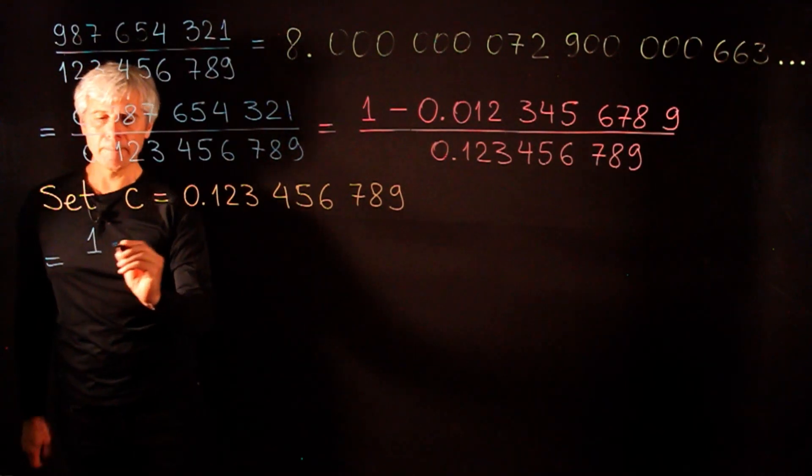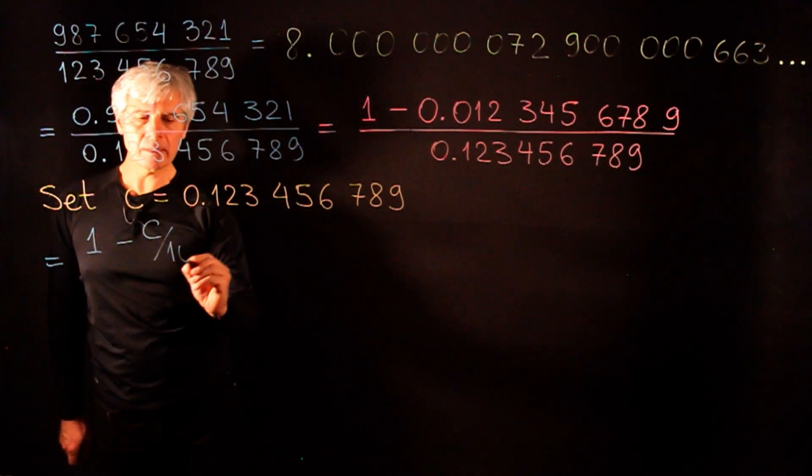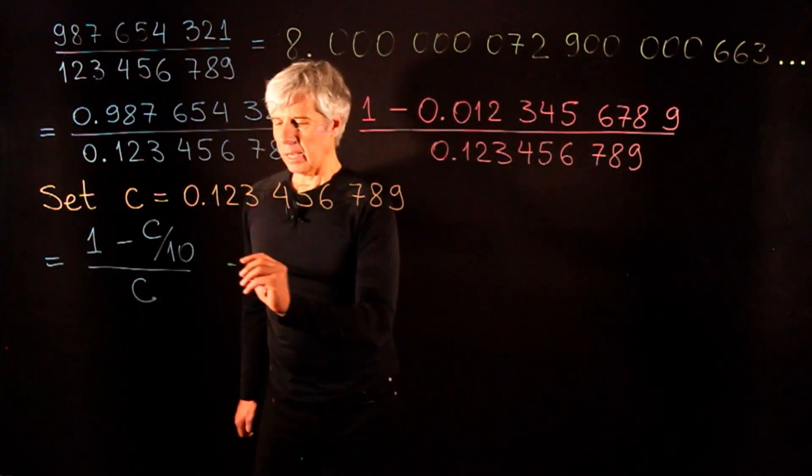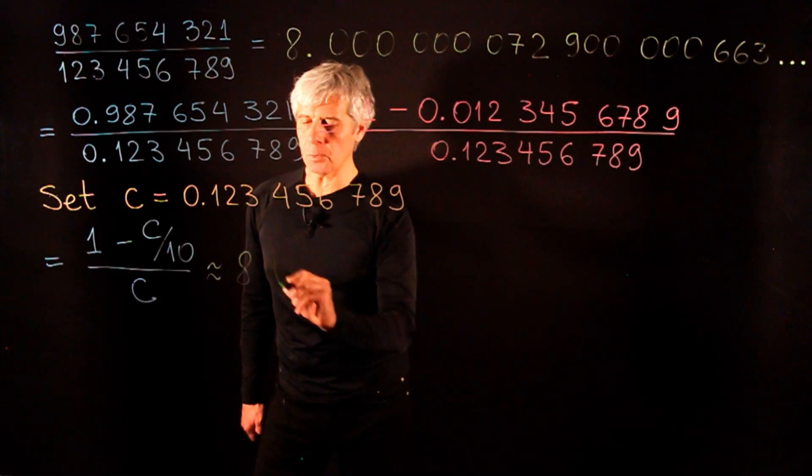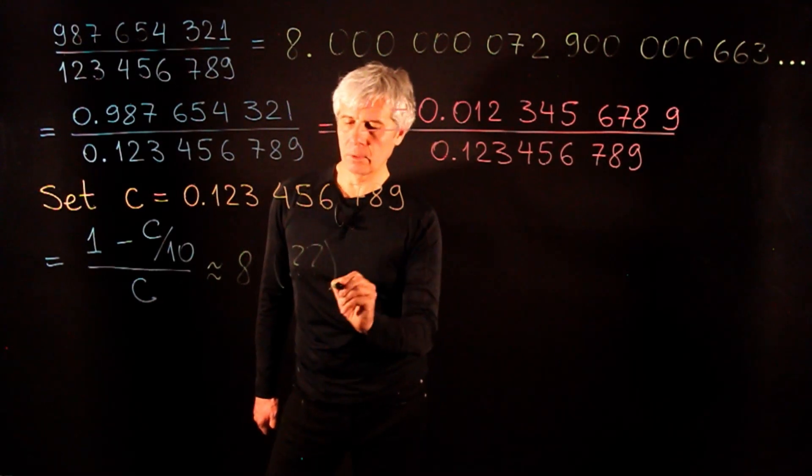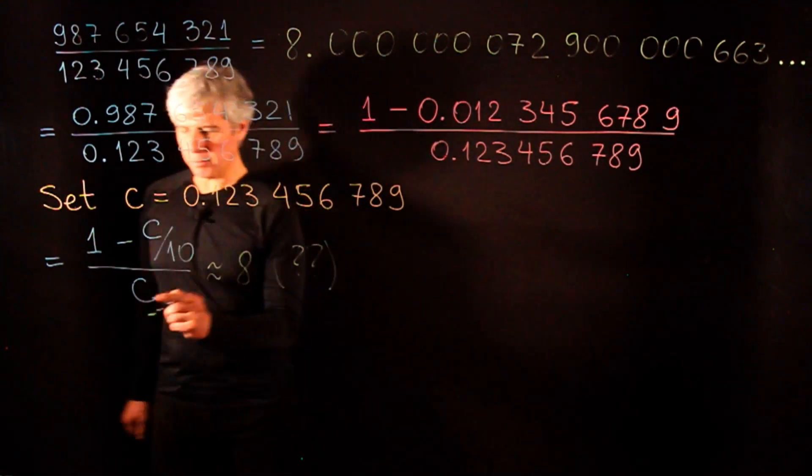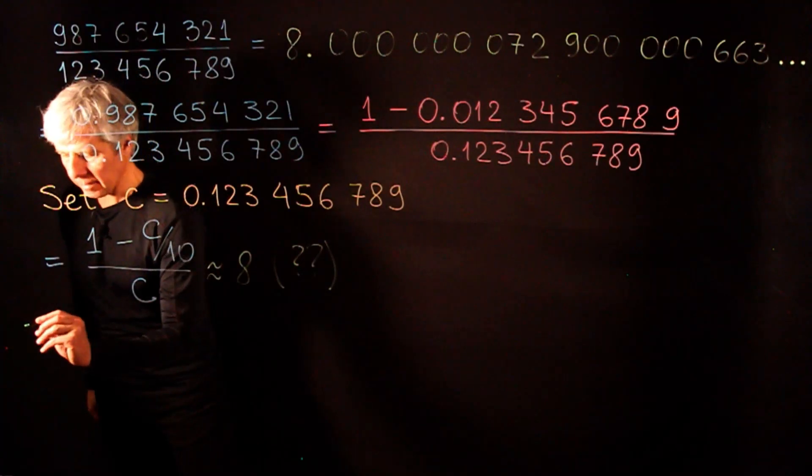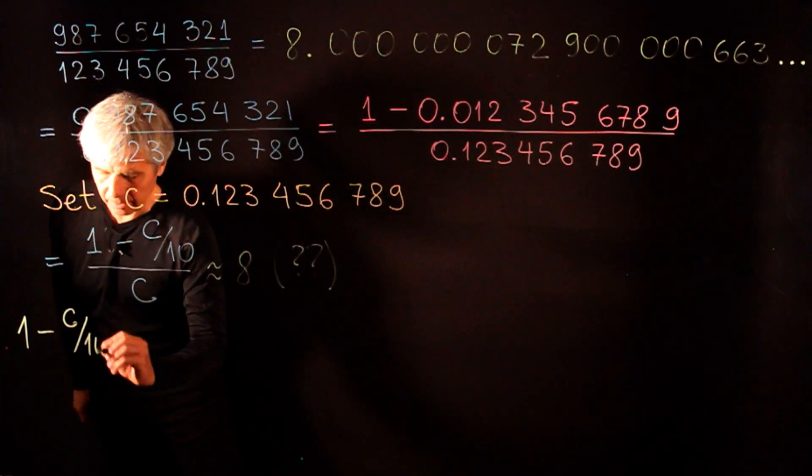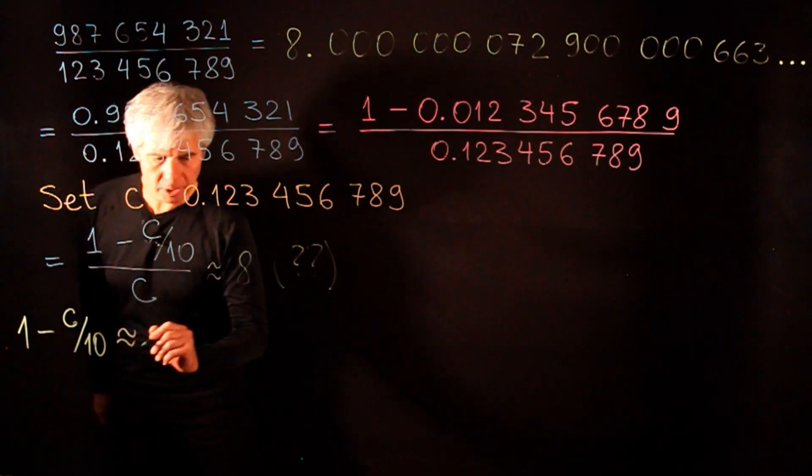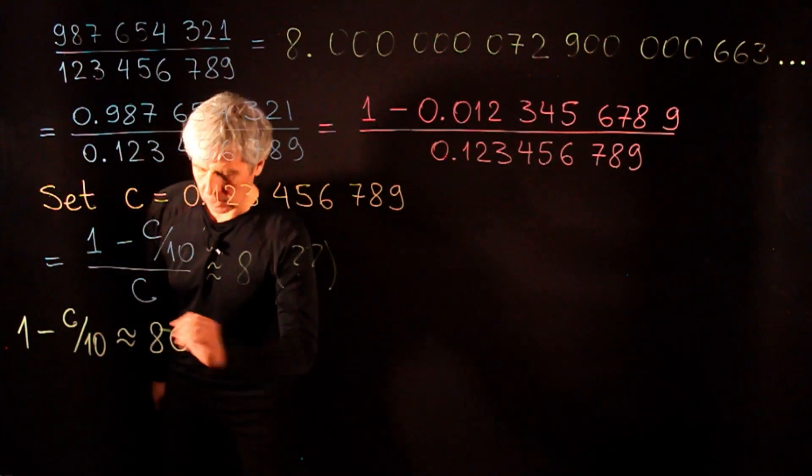So it's 1 minus c divided by 10 over c. And what we would like to show is that this is approximately equal to 8. Let us work with this expression. If we multiply both sides by c, then we get that 1 minus c over 10 should be approximately equal to 8c. So this is what we want to show.